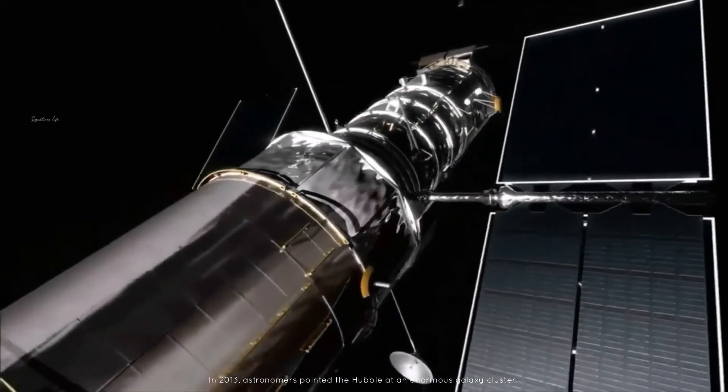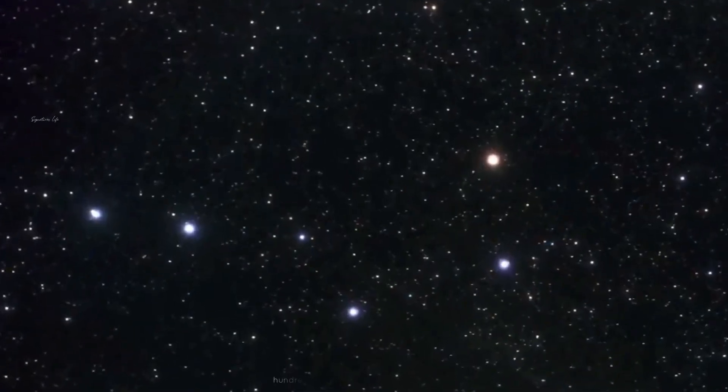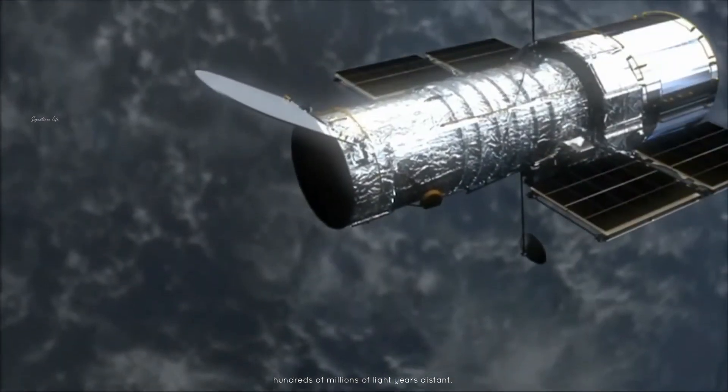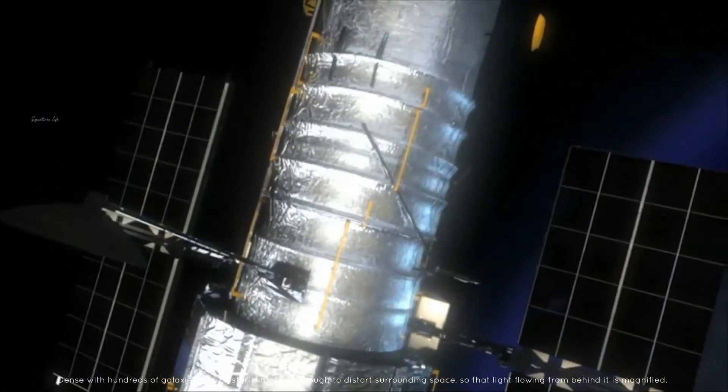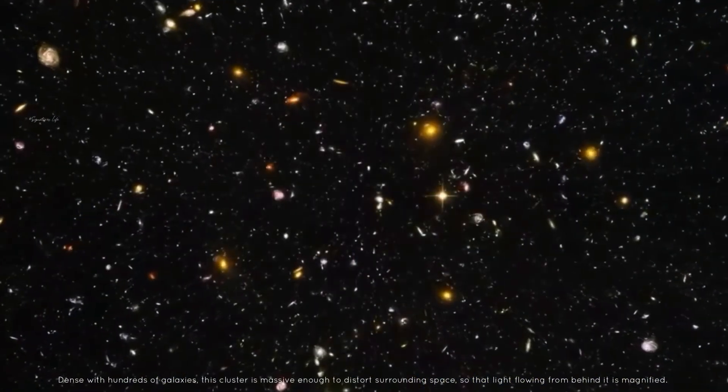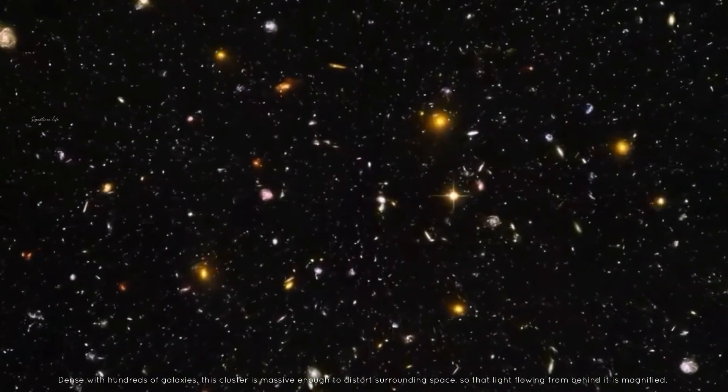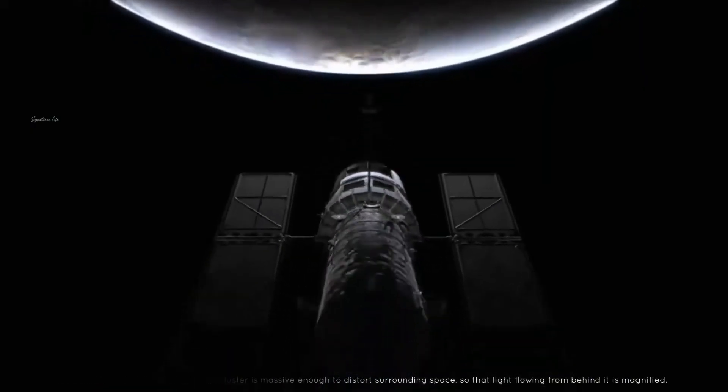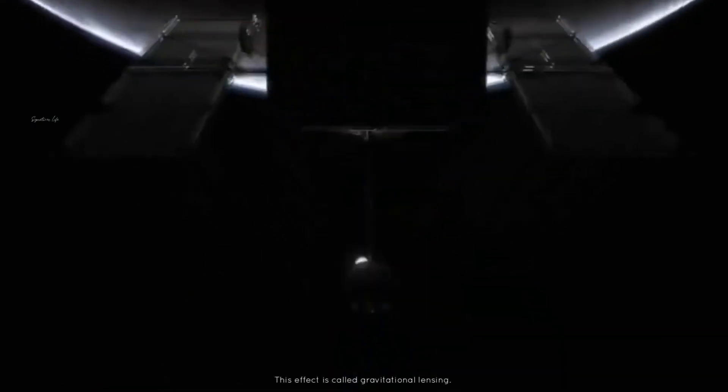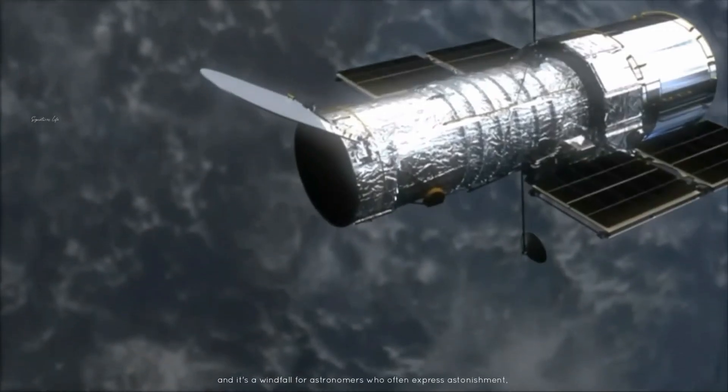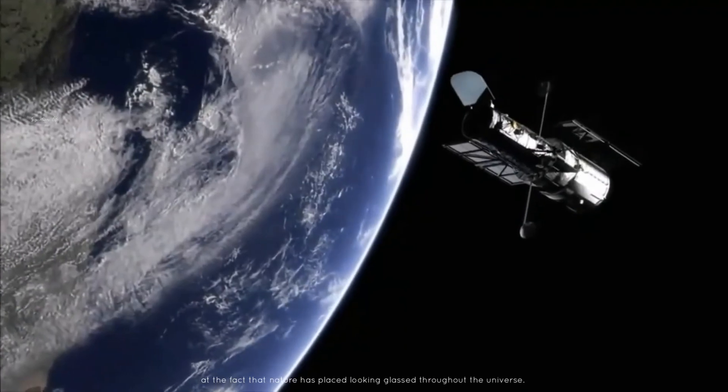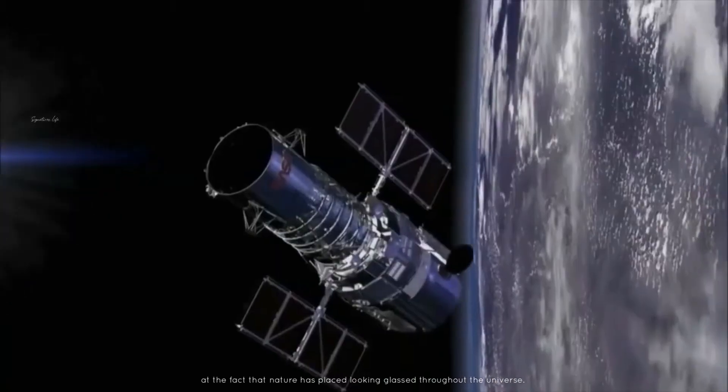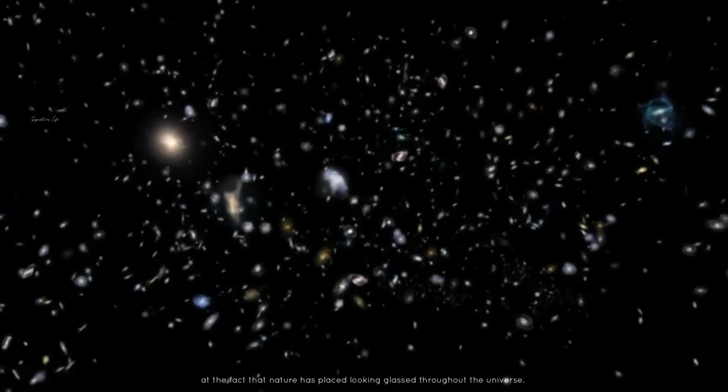In 2013, astronomers pointed the Hubble at an enormous galaxy cluster hundreds of millions of light-years distant. Dense with hundreds of galaxies, this cluster is massive enough to distort surrounding space so that light flowing from behind it is magnified. This effect is called gravitational lensing, and it's a windfall for astronomers who often express astonishment at the fact that nature has placed looking-glasses throughout the universe.